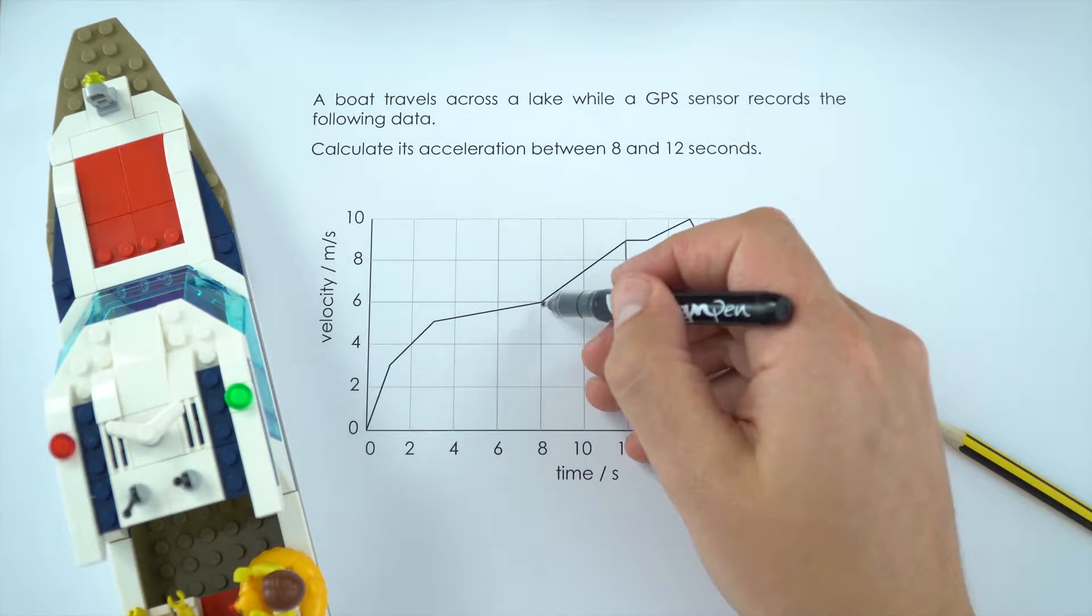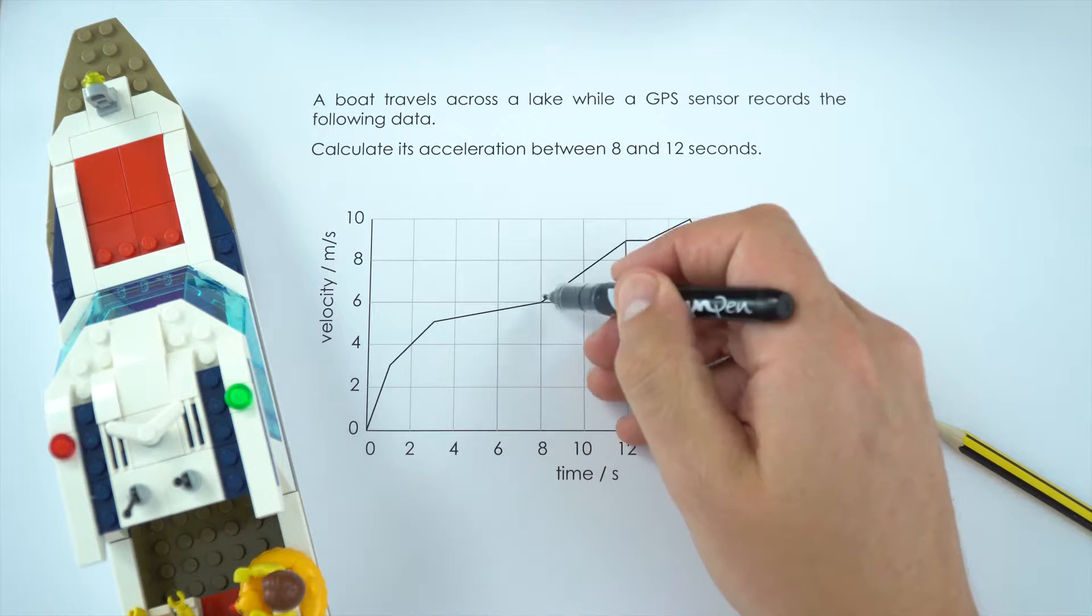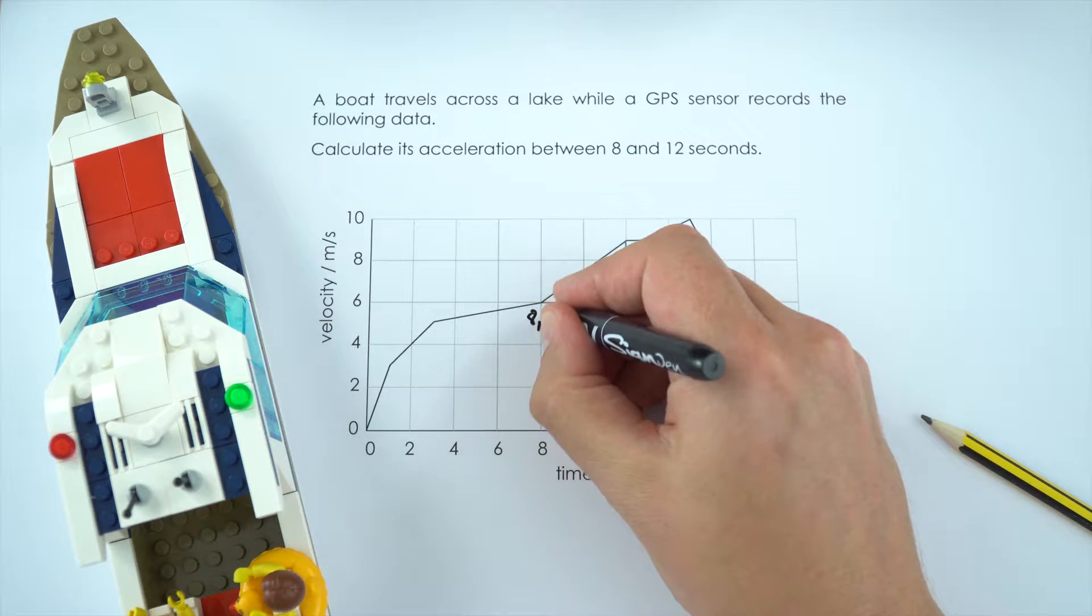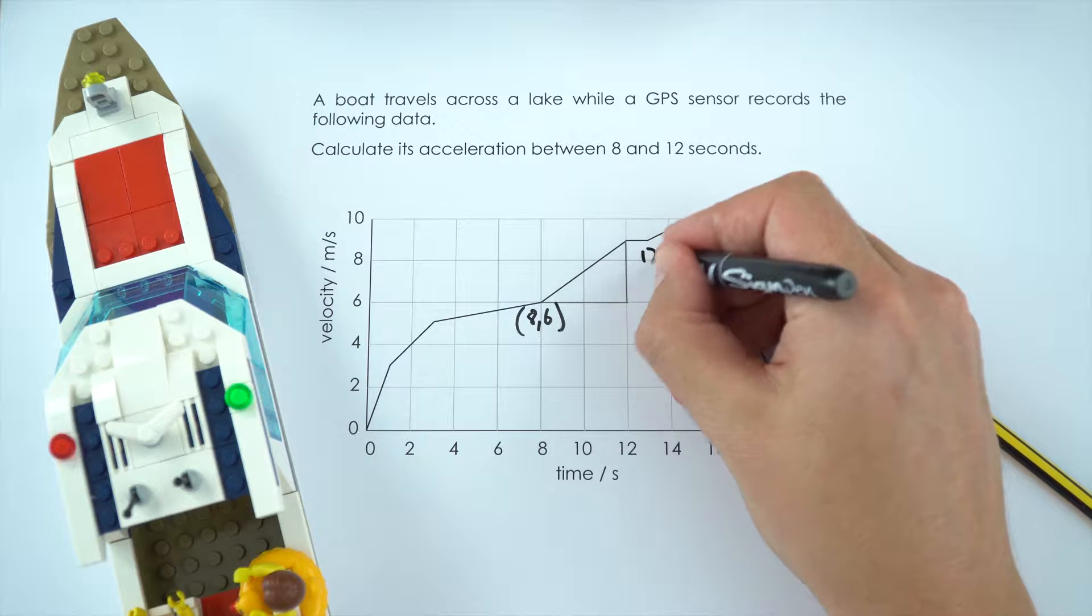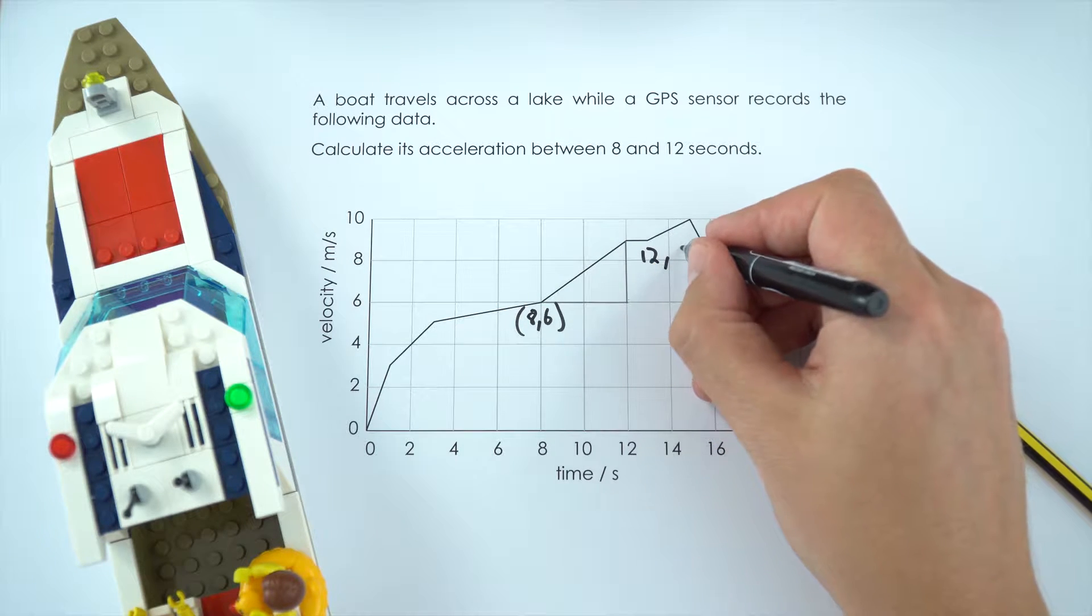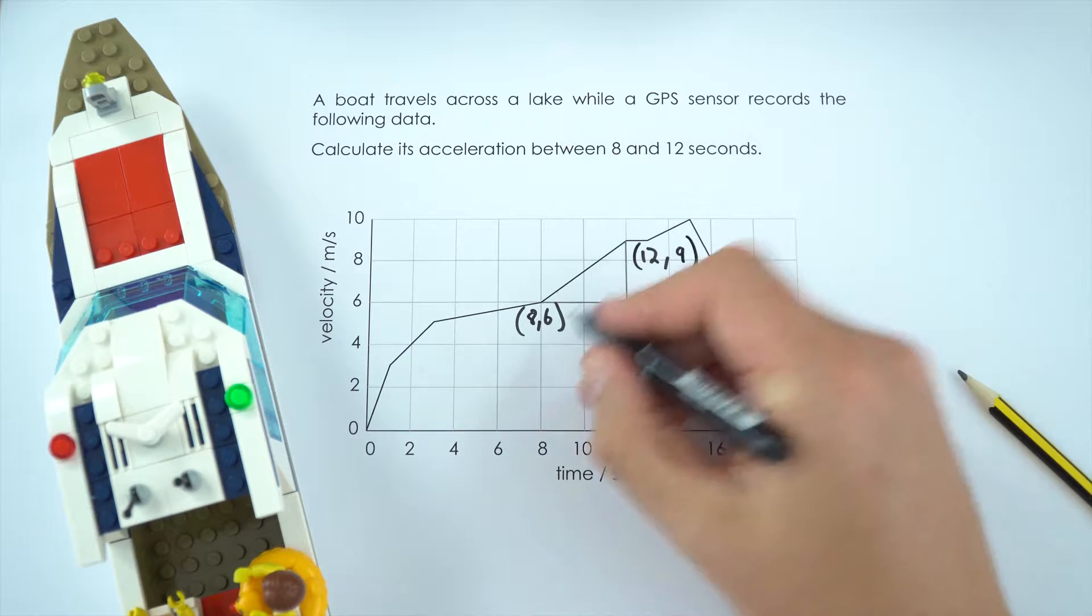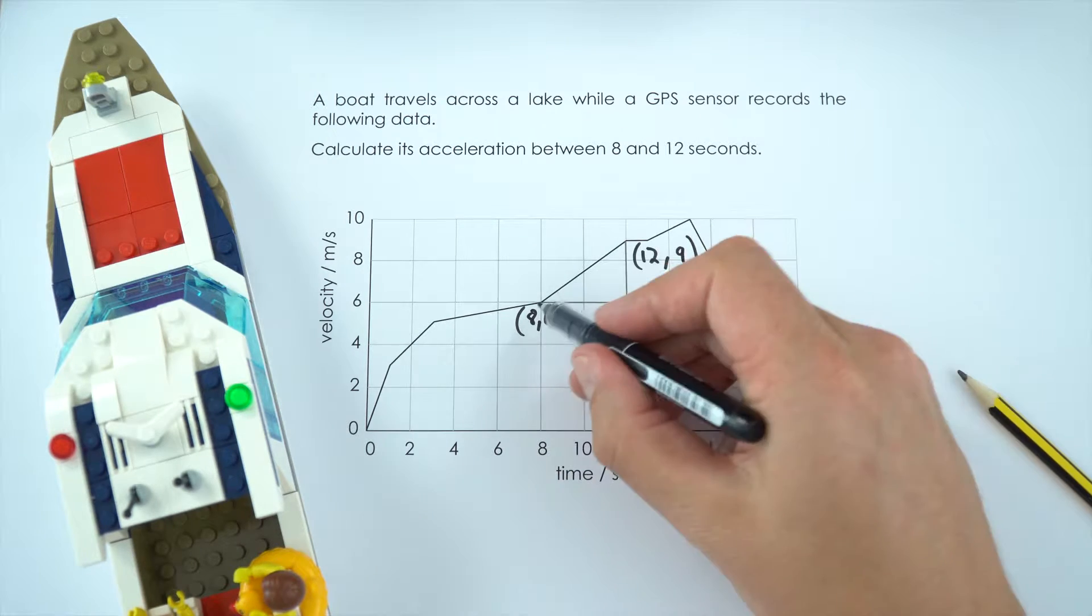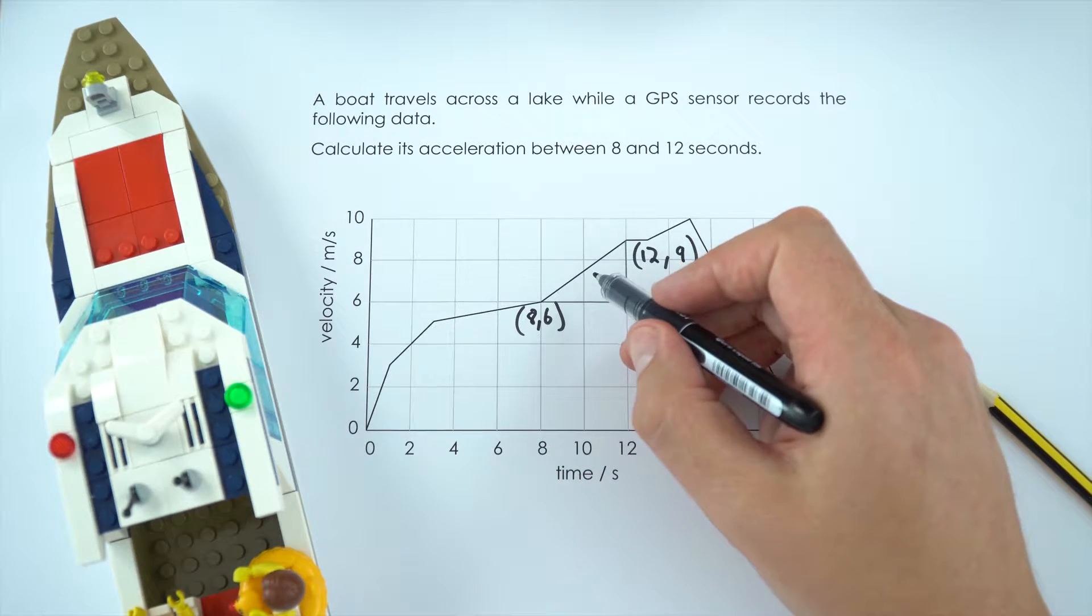We can then actually look at these points. So this point here is (8,6), I'm just going to write that to the side, and this point up here is 12 and it's midway between 8 and 10, so it's (12,9). So these are the coordinates of the top and the bottom of the line that we're looking for the gradient.